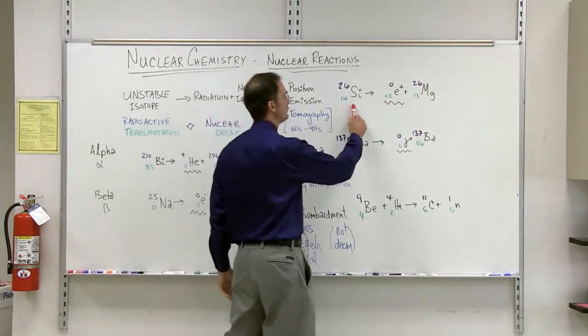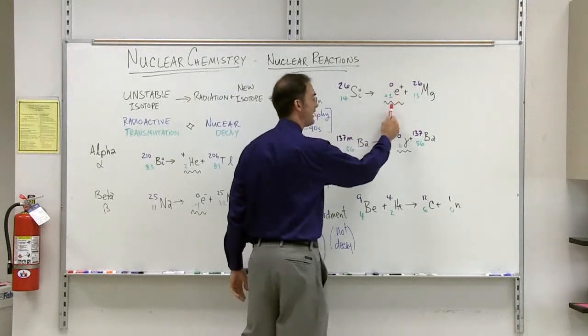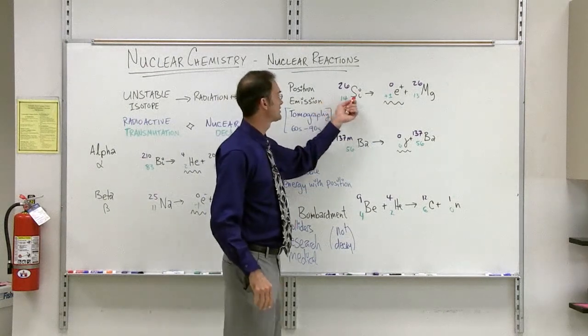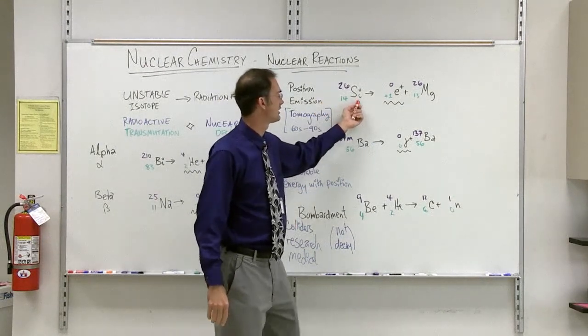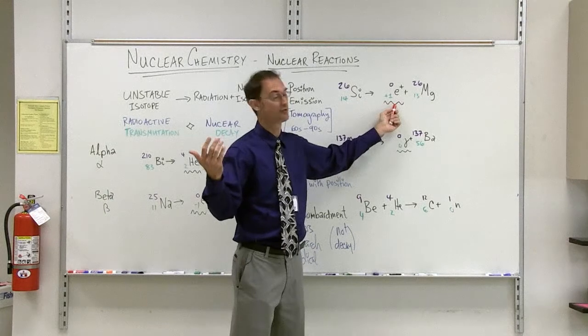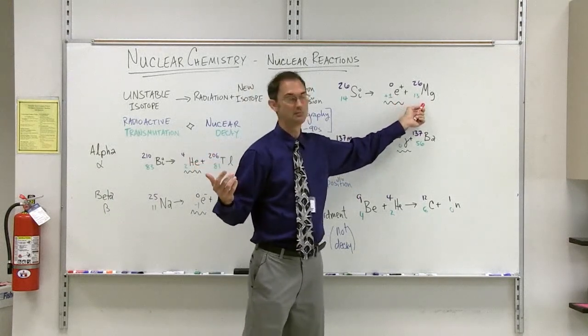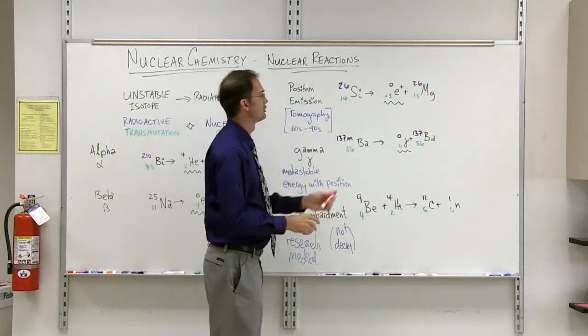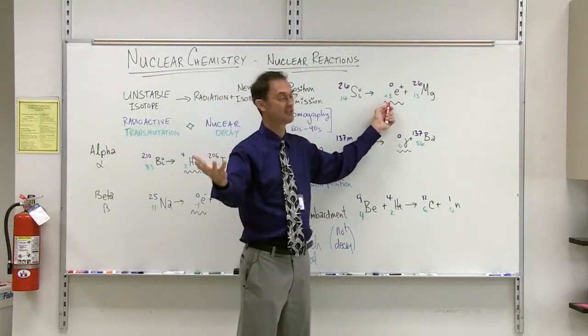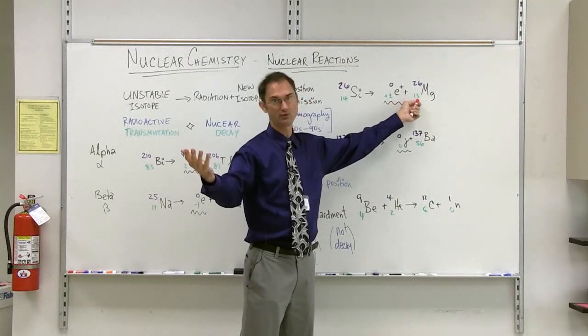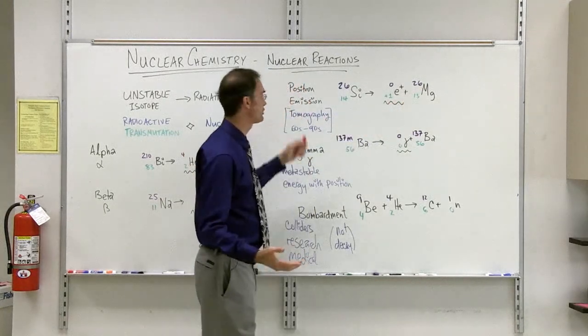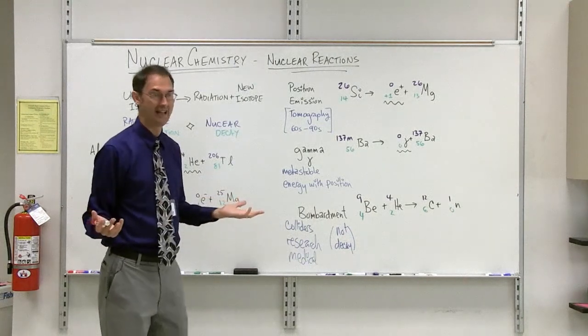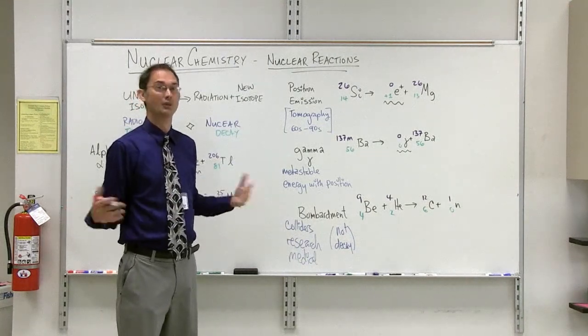Here, for example, silicon will decay into a positron as its radiation plus magnesium. We have 26 protons and neutrons in silicon. We don't have any protons or neutrons in the positron, and we will get magnesium with 26 protons and neutrons. We begin with 14 charge, the positron takes away a positive charge, and then we get magnesium with 13 protons left. This then is positron emission, which is weird, much like beta emission is weird. But hey, we didn't make the universe, we just live here.